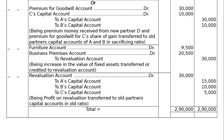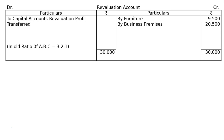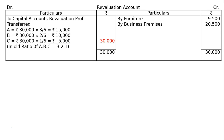Revaluation account: on the credit side, furniture increased by 10% and business premises increased by 10% — Rs. 9,500 and Rs. 20,500 respectively. Stock, debtors, bank, and cash are current assets and are not revalued. Total credit is Rs. 30,000. Revaluation profit transferred to capital accounts in old ratio of A to B to C equal to 3 to 2 to 1: that is Rs. 15,000 for A, Rs. 10,000 for B, and Rs. 5,000 for C.